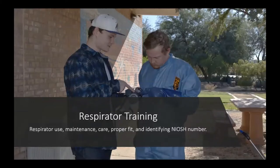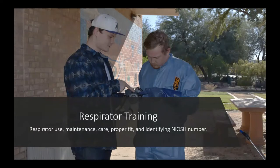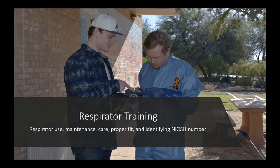Respirator packaging includes instructions on how to ensure it fits, seals, and how to clean and maintain it, but respirator training is equally important and required. Handlers working with pesticides requiring respiratory protection must go through respirator use training, including how to read the label for details about the type of cartridges and filters to use. Respirator filters and cartridges are listed using a NIOSH number — the National Institute of Occupational Safety and Health. Applicators using tight-fitting respirators must have an annual fit test with record-keeping requirements. Powered air respirators are more expensive but don't require the annual fit test.